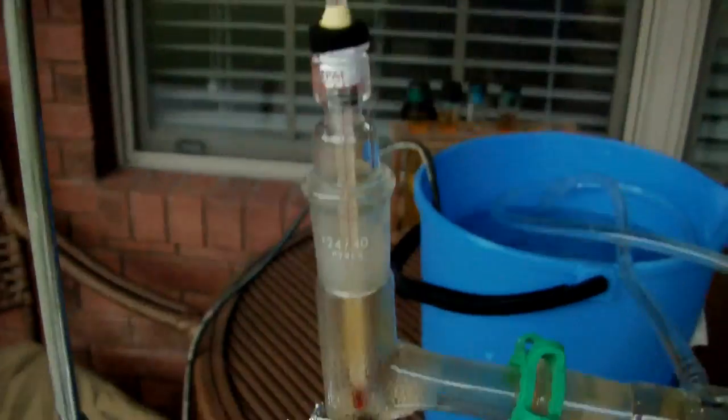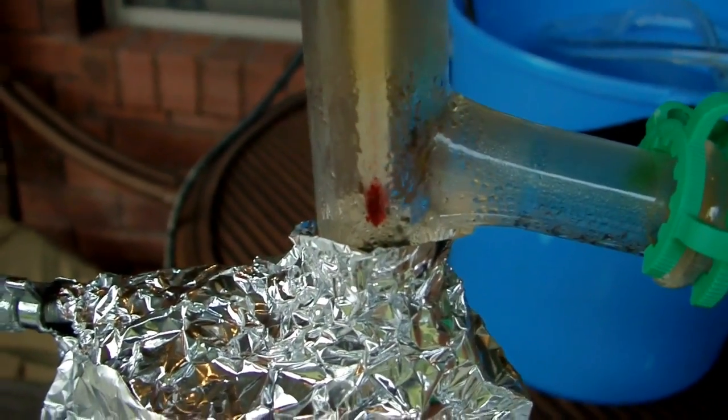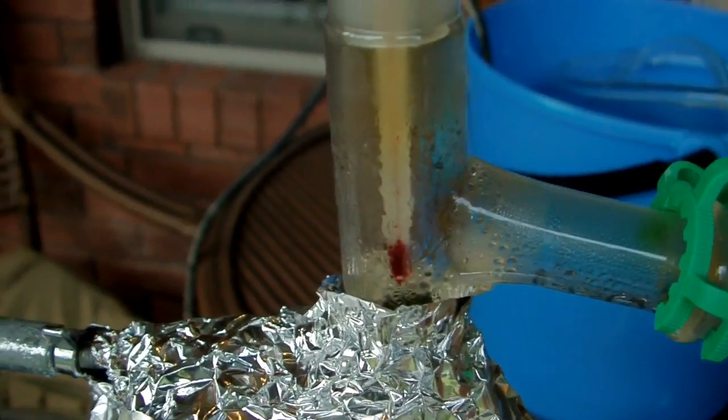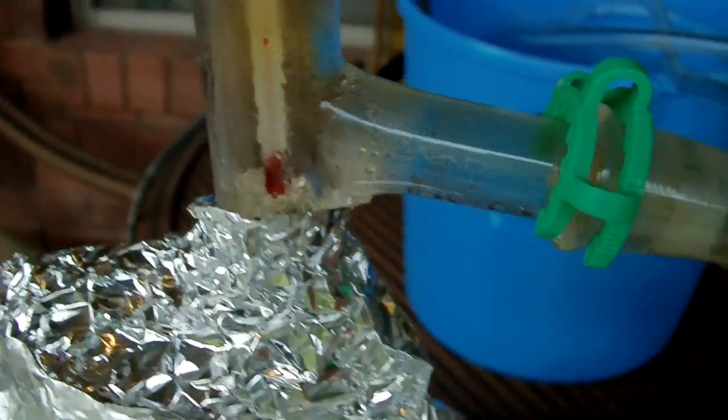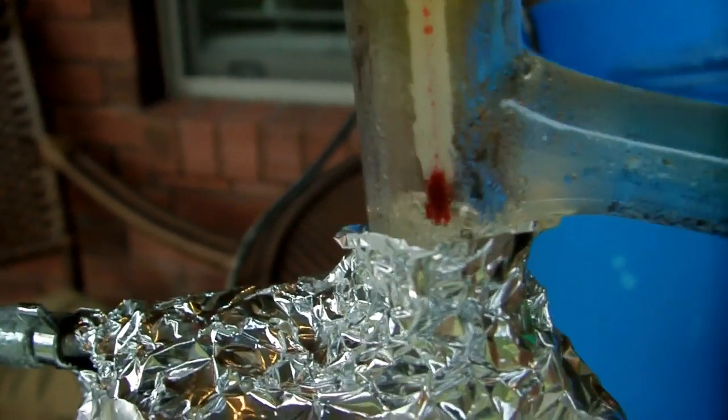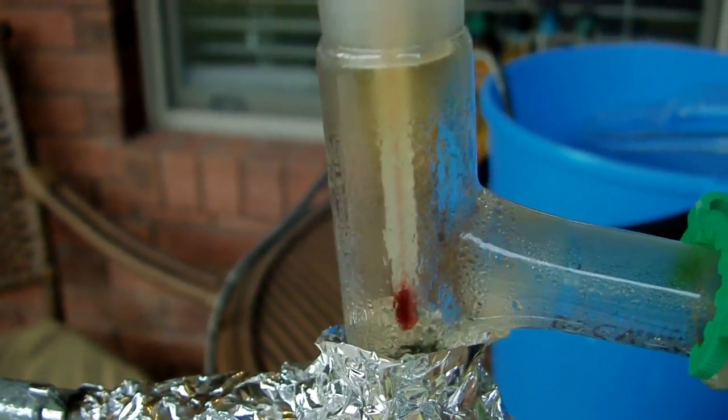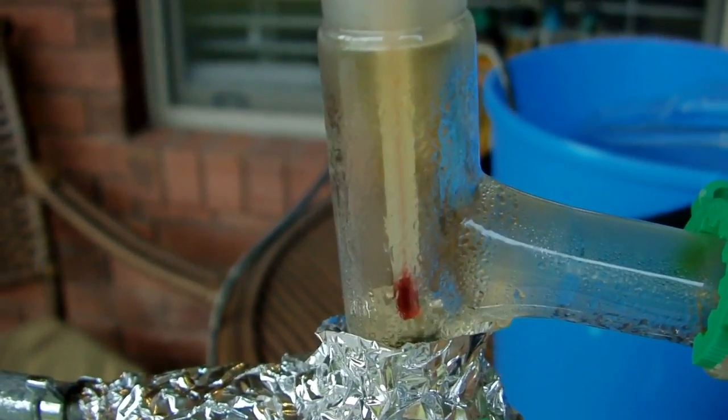So you can see inside the still head here, we get a nice brown coloration. And you can see some of the acid condensing and dripping back down. So it looks like we're about to get our first couple of drops of product. Right inside the distillation head there, there's a little bit of fog floating around.